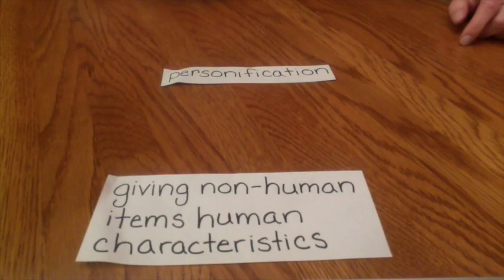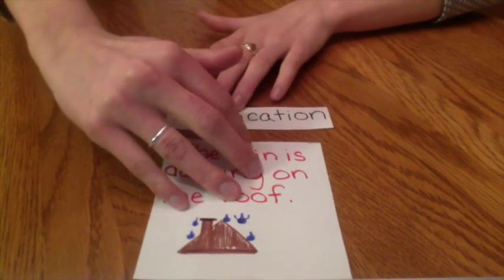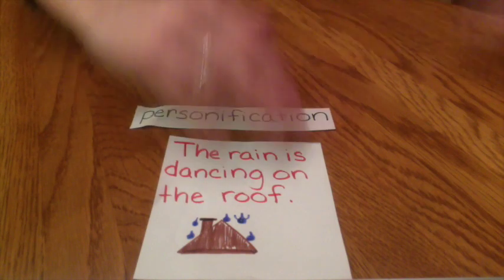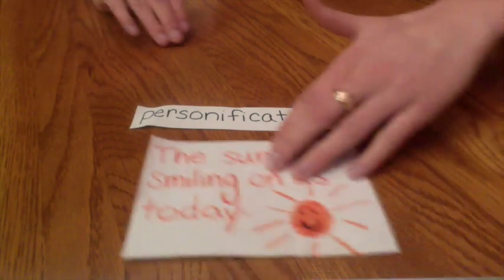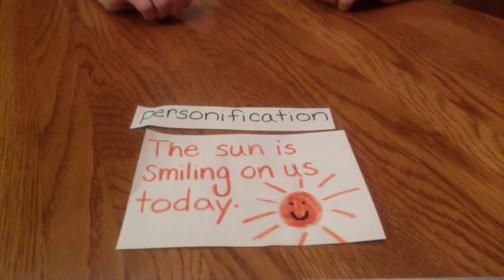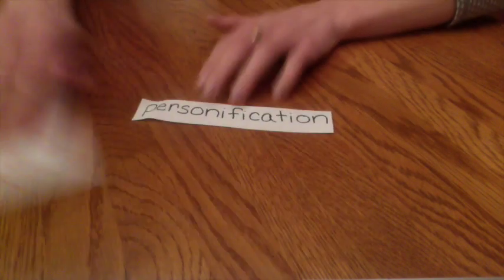Personification is our fifth term. Personification is giving non-human items human characteristics. Let's take a look at some examples. The rain is dancing on the roof — rain does not really dance. Or the sun is smiling on us today — it doesn't really smile. We're giving it human-like characteristics.